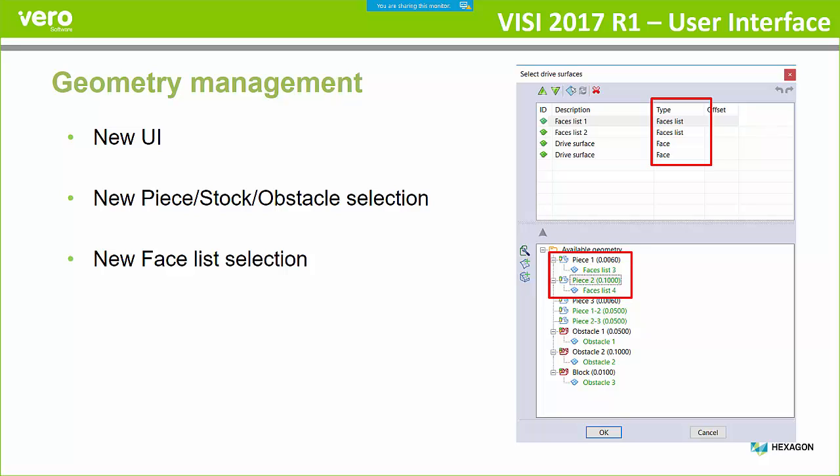It's the same with the facelist selection. The facelist selection options are now a lot more enhanced for working with facelists or drive surfaces. Anybody that's got 5-axis machining or anybody that uses the ISO machining can now mix and match working with facelists and drive surfaces. In the current versions, you can work with one or the other, but you can't work with both. So that's changed for this release.